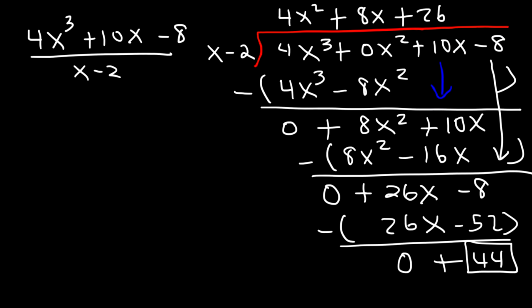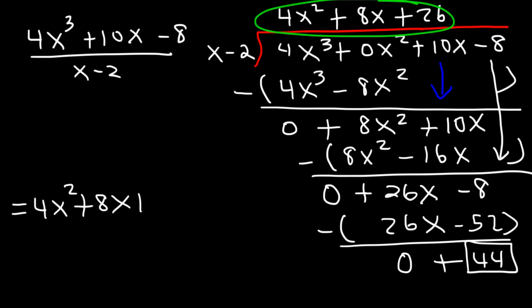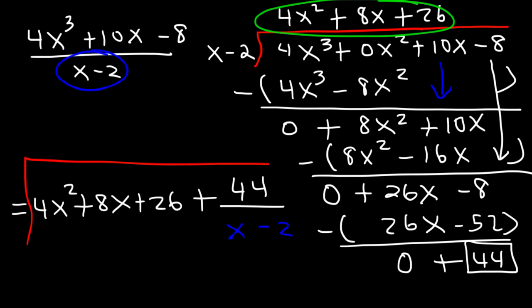So the final answer is the quotient 4x squared plus 8x plus 26, plus the remainder 44 divided by x minus 2. Now you know how to divide a polynomial by a binomial.